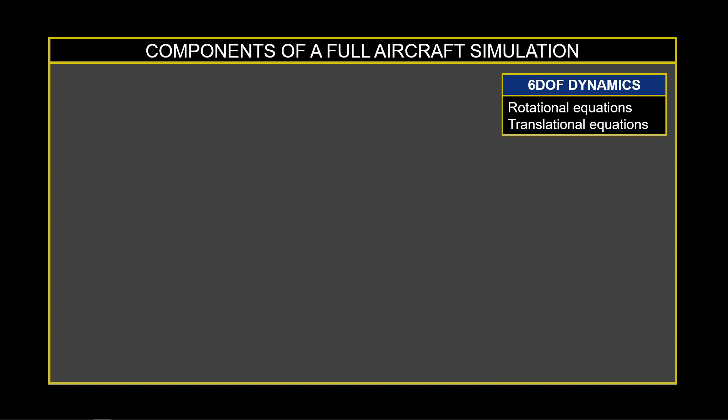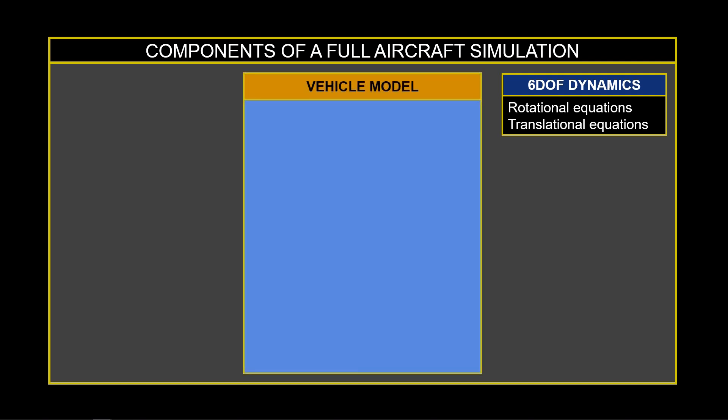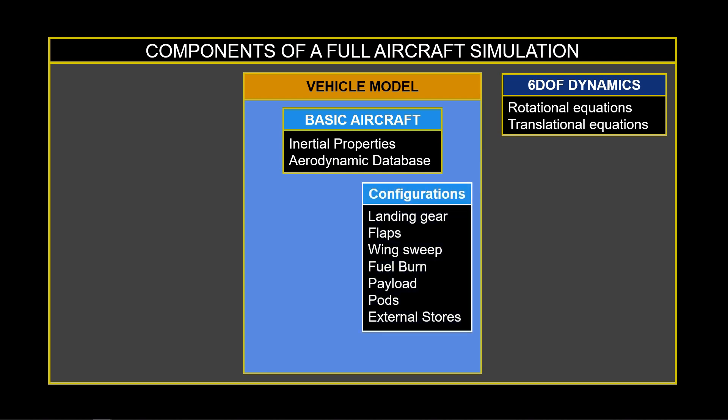However, in a full aircraft simulation, there will be much more than the 6DOF to the state equations. We'll also need a vehicle model to define parameters in the 6DOF dynamics. These include mass and inertial properties, as well as aerodynamic data defined over a set of flight conditions. If the aircraft operates in different configurations, we'll need to include those as well, such as if the landing gear is up or down, if it's carrying a payload, or if it has an additional fuel pod.